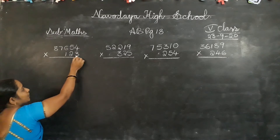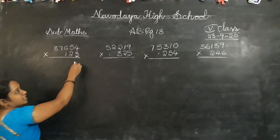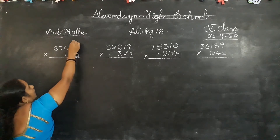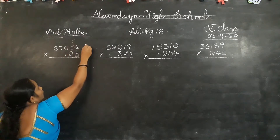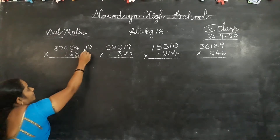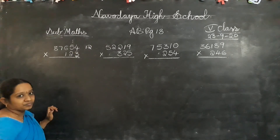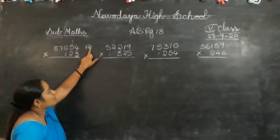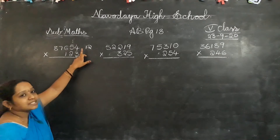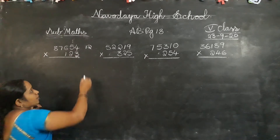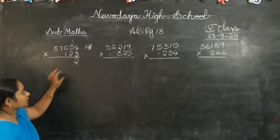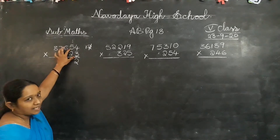So first multiply with 3. 3 fours are 12. 12 is a 2-digit number. So write 2 in the 1's place in the answer. 1 is carry forward to the next number. So write 2 in the 1's place. Next, 3 fives are...